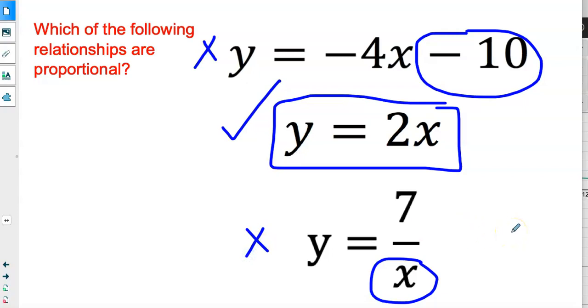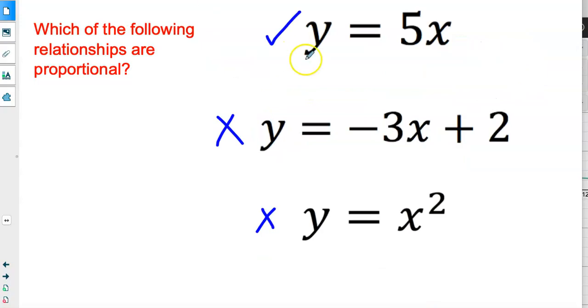So it's going to take a while for you to be able to just look at the equation and recognize whether it's proportional or not. But I hope this gives you a good start. If it's simple like this and it looks like the form y = kx, it's proportional. If it has a constant added or subtracted, if x is in the denominator, or x has a power other than 1, then it's not proportional.